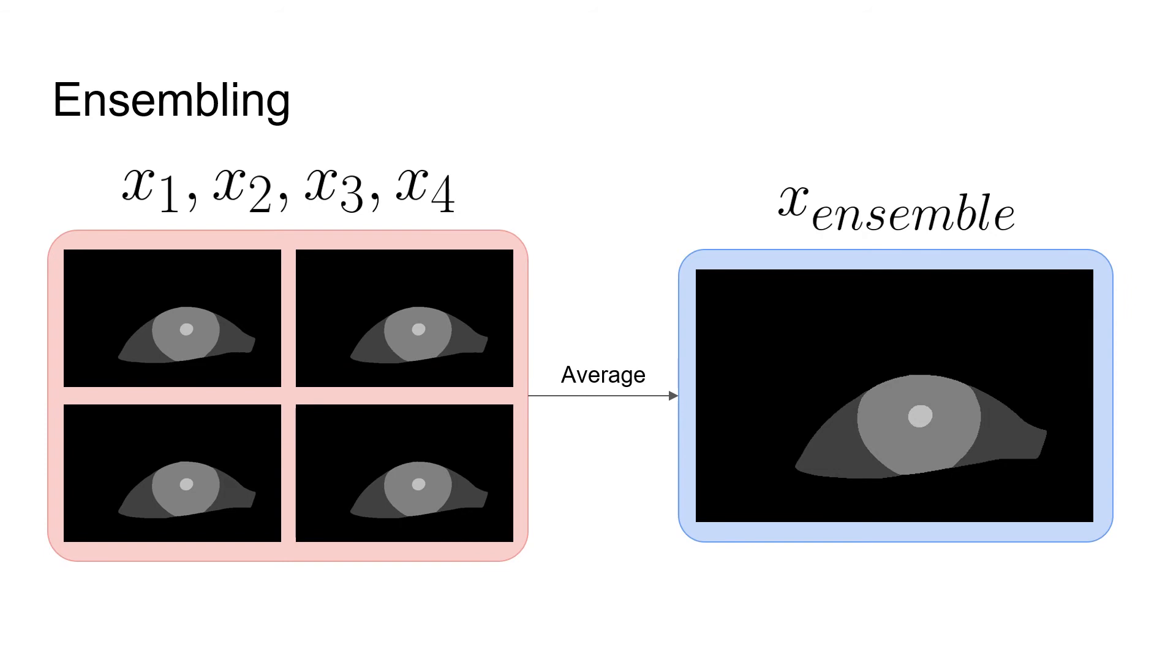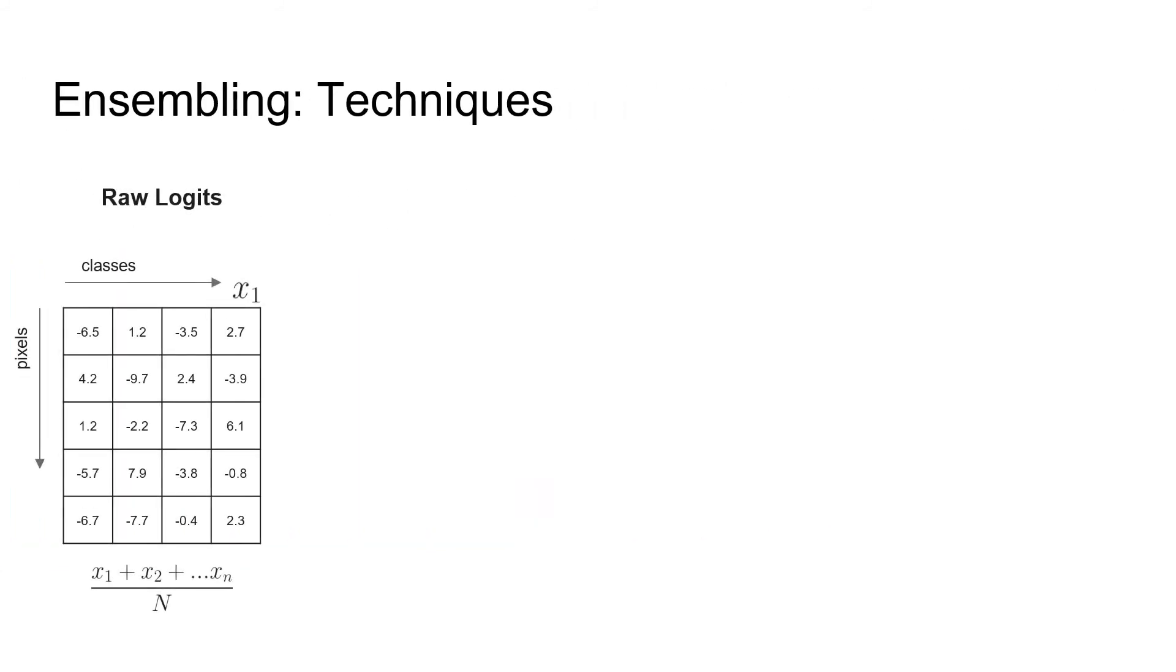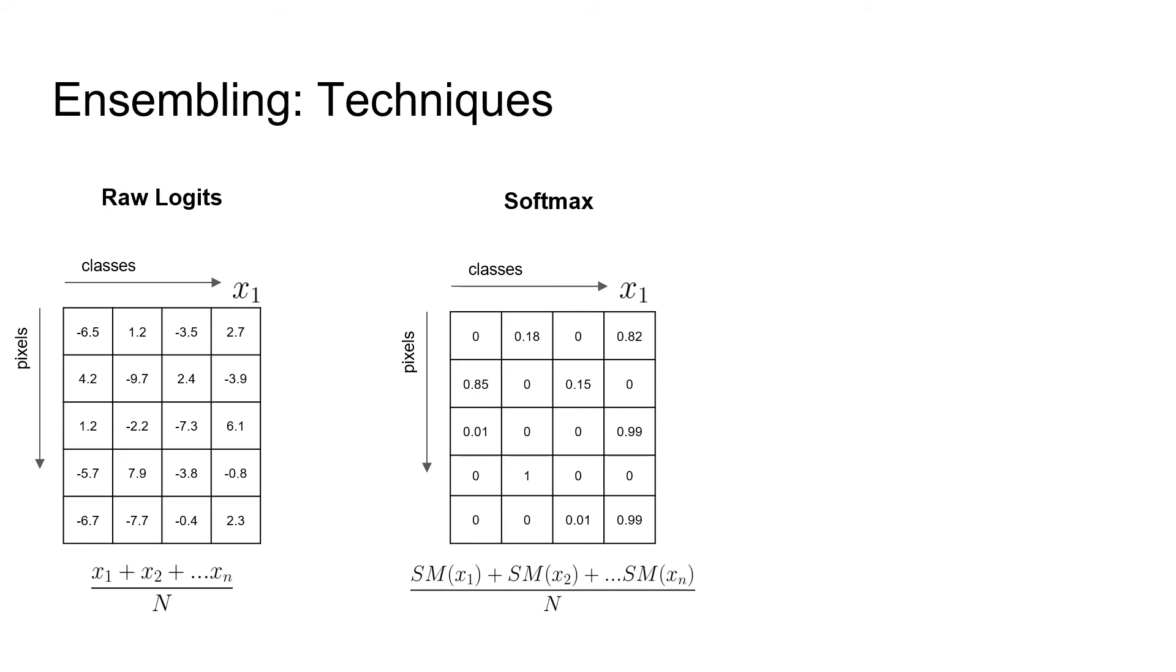Another de facto standard technique always used in competitions is ensembling. We've tried multiple ensembling techniques. So here is the raw logits output from one model. Class scores are located horizontally, and the pixels are shown vertically. It is not recommended to average models outputs on this level, because each model can carry its own bias with different distribution. Usually, those outputs are run through the softmax function to normalize the logits and then summed over all models and re-normalize back again.